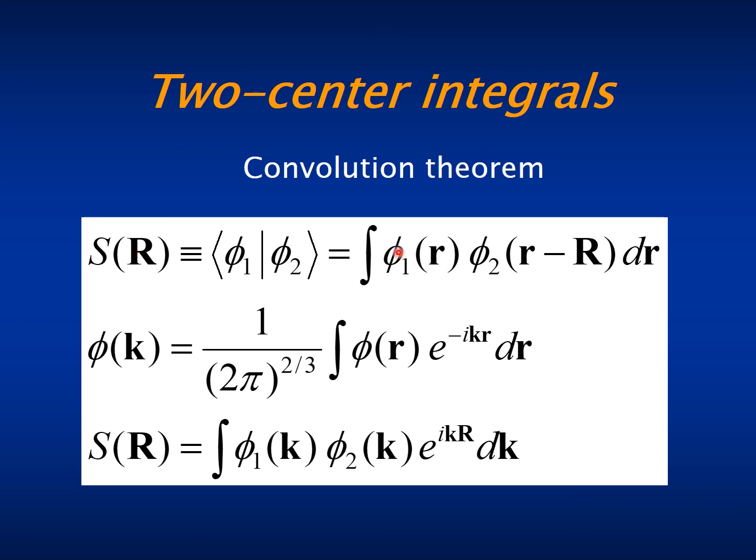Can be described as the convolution between the two functions φ1 and φ2 and the convolution theorem says that a convolution in real space is the same as a normal product in reciprocal space.